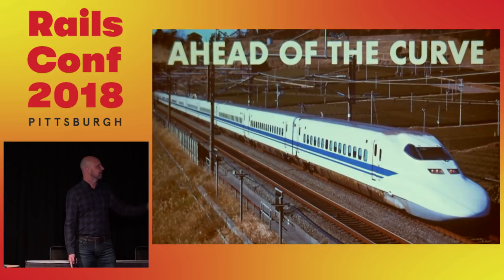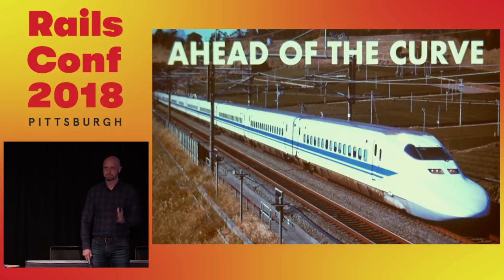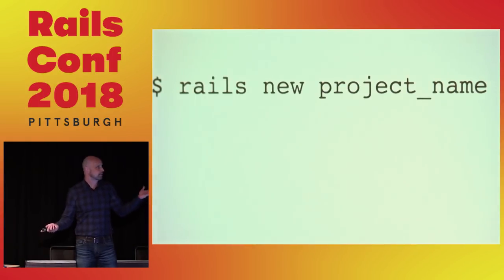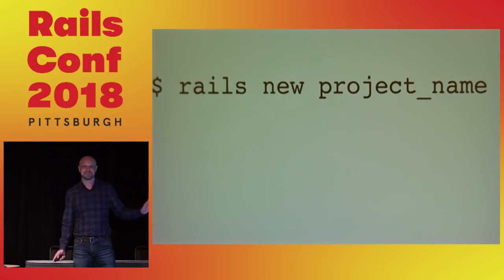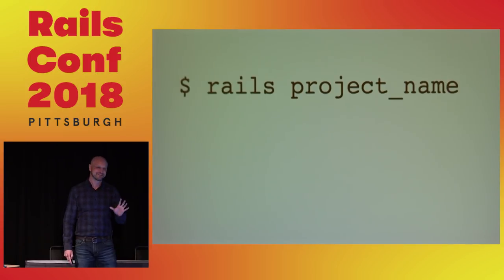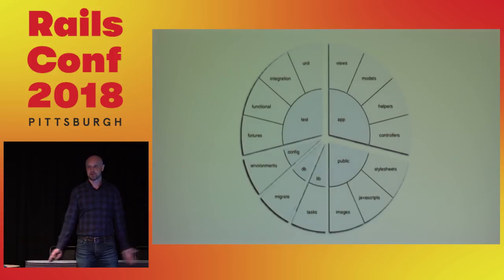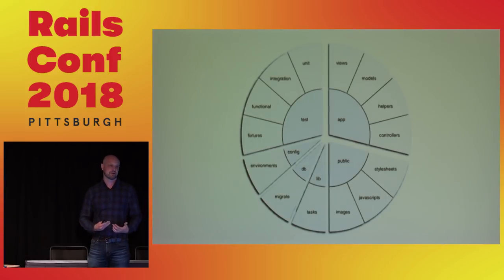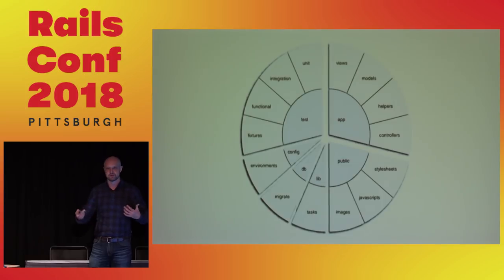What I want to talk about in this first section is how ahead of the curve Rails was. It's easy to forget because Rails has been pushing the whole industry as it's gone along. Starting right at the beginning with a new project — Rails new project name. Actually back then it was just 'rails project name'. Typing a command at the command line and automatically generating a full project skeleton was a big deal. You had a standard set of directories and files — a place to start — and if you looked at someone else's project, you had a way into it.